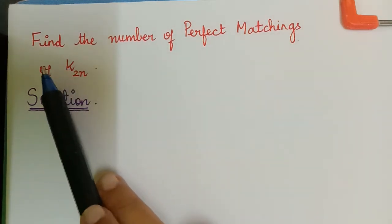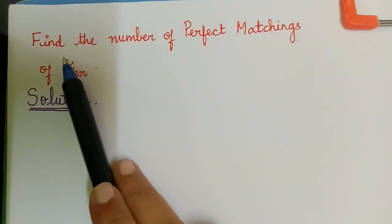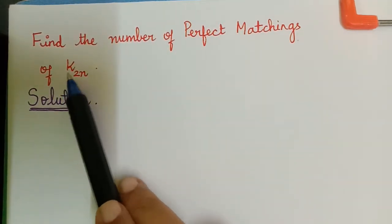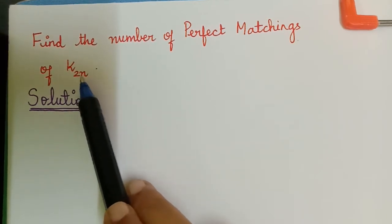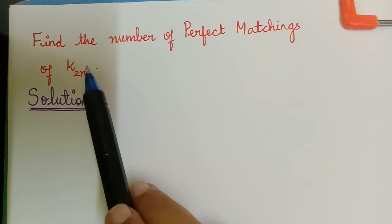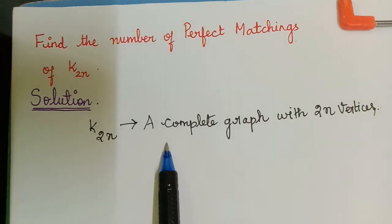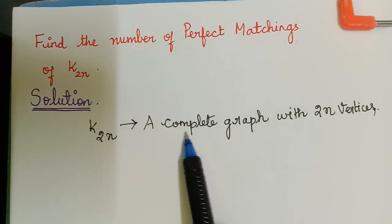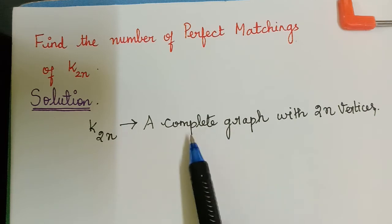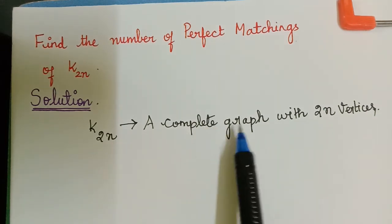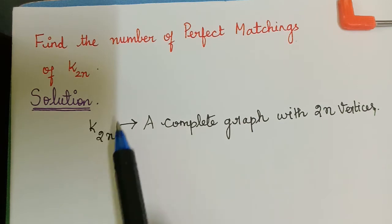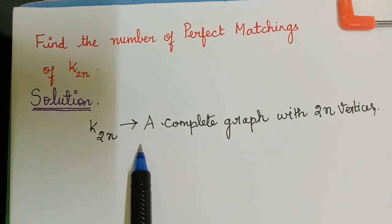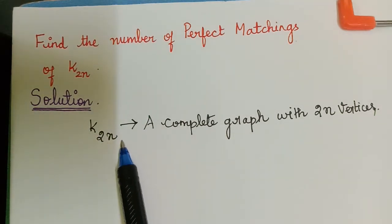Hello students. In this lecture, let us find the number of perfect matchings of K₂ₙ. The graph K₂ₙ is a complete graph with 2n vertices — that is, a complete graph with an even number of vertices, in which every pair of vertices is adjacent to one another.